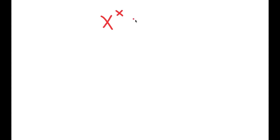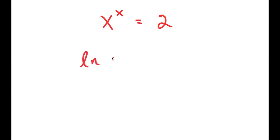For this video, I'm going to solve the equation x to the power of x is equal to 2. To solve this, I'm going to use logarithms and the properties that come with logarithms. I'll start by taking the ln, or natural log, on both sides, so I get ln of x to the power of x is equal to ln 2.